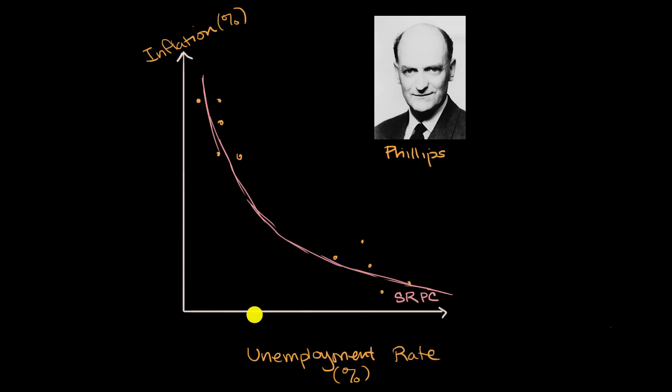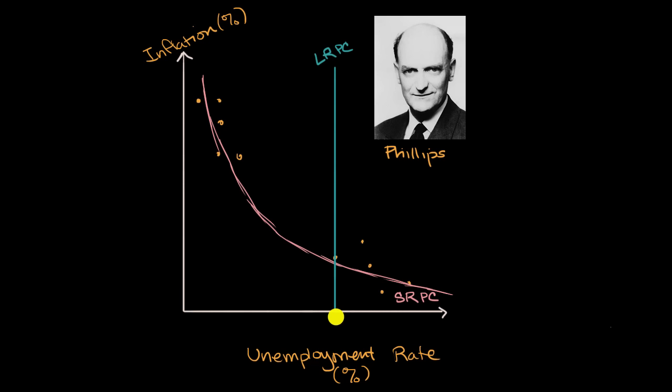The long-run Phillips curve describes the natural rate of unemployment you get when the economy is at full employment. Remember, full employment doesn't mean everyone is employed — it just means the sustainable rate of employment for the country. If we draw that long-run Phillips curve, it appears as a vertical line, showing that over the long run the unemployment rate sits at a fixed value irrespective of what's happening with inflation.